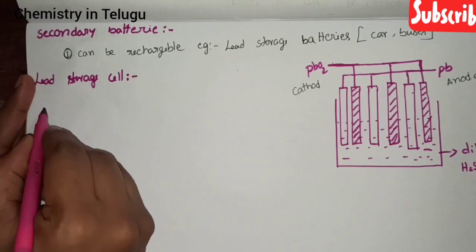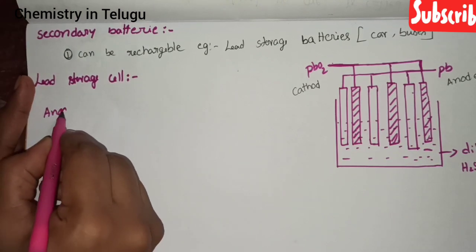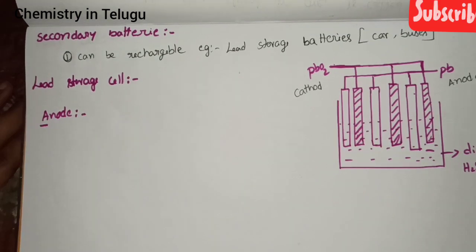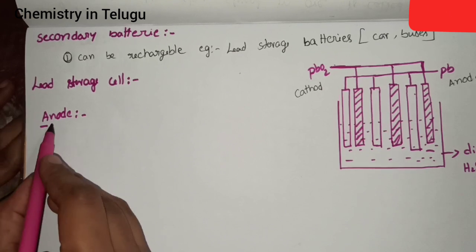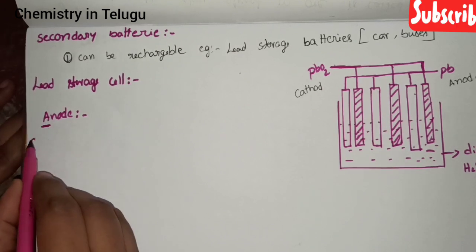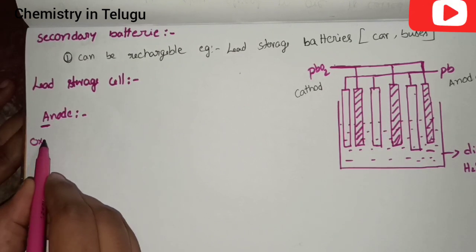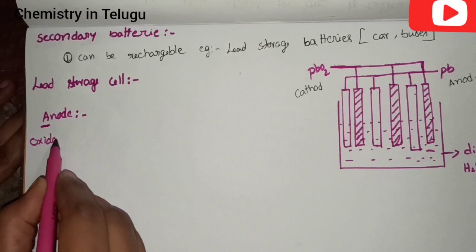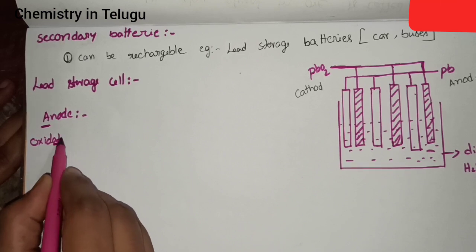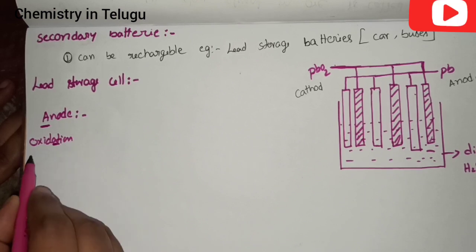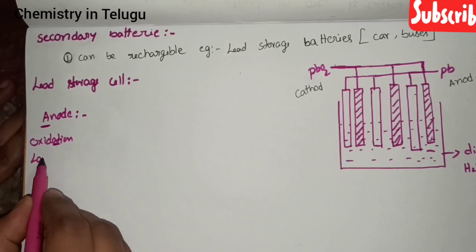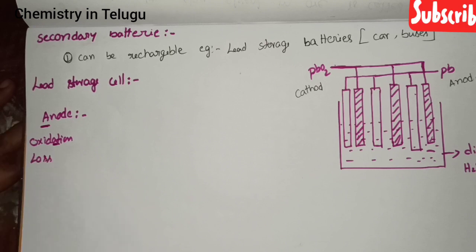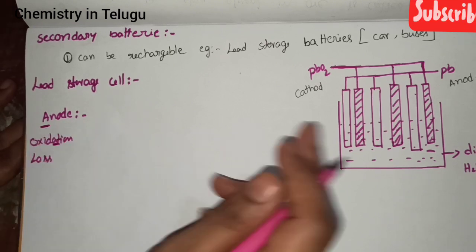At the anode, the process is oxidation — that is, loss of electrons. The anode undergoes oxidation. Loss of electrons occurs at the anode.